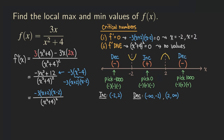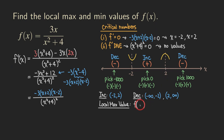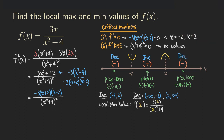Now we need to find the values by plugging the critical numbers back into the original function. For the local maximum value at x equals two: f(2) equals three times two over two squared plus four, which is six over eight, which simplifies to three over four. So the local maximum value is three over four.